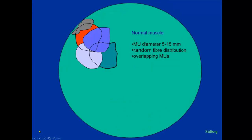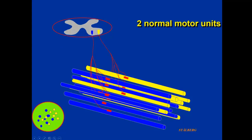The motor units in a normal muscle occupy a space of about 5 to 15 millimeters in diameter and the territory of individual motor units overlap. The muscle fibers within a motor unit territory are distributed randomly. Here is an example of two motor units, one blue and one yellow. The yellow one has 50 to 200 muscle fibers connected and randomly distributed, and the blue motor unit is overlapping with that.